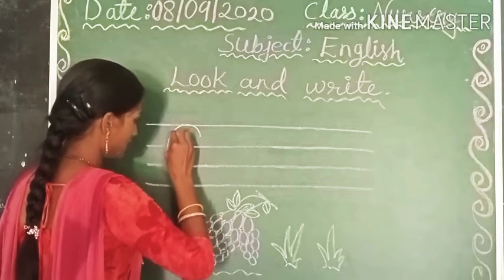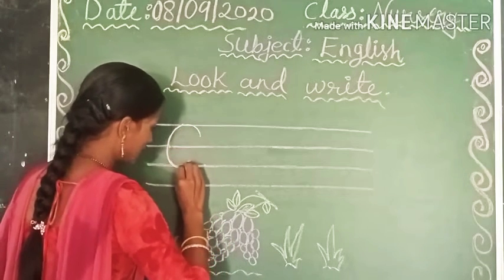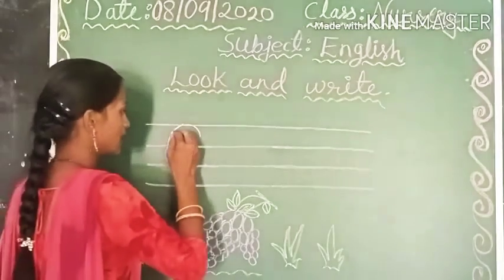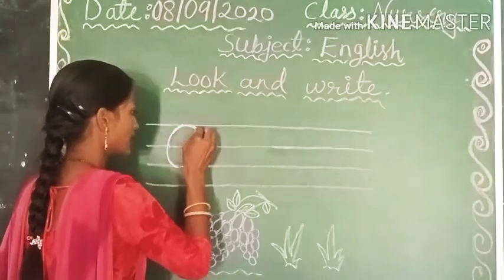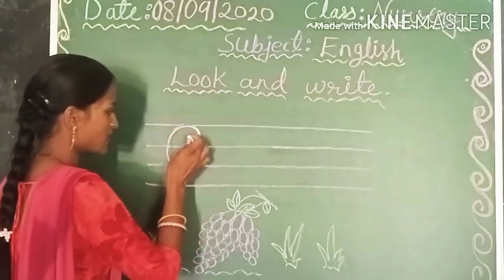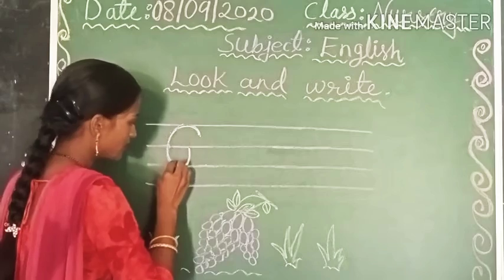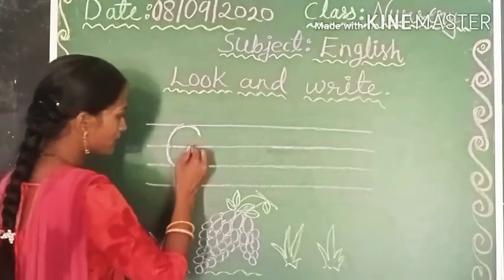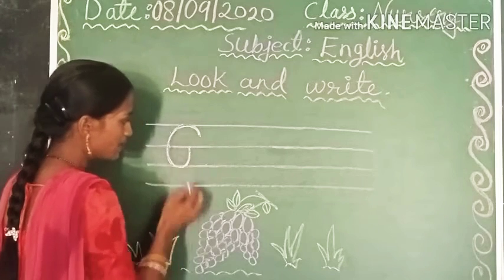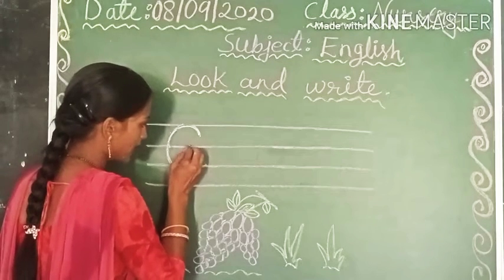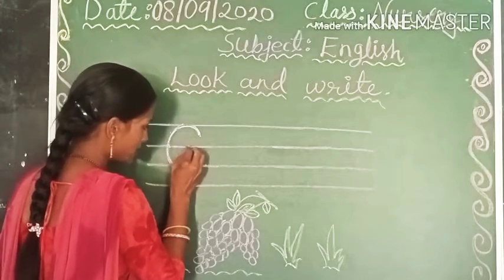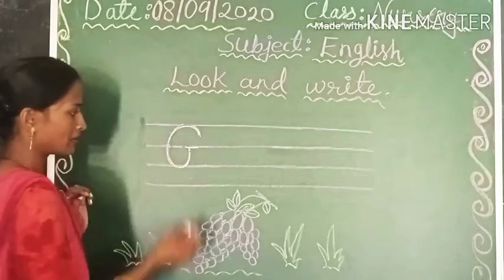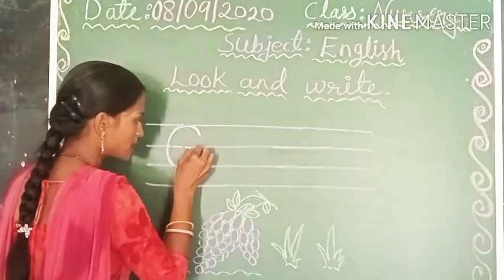यह देखिए, capital letter G बनाने के लिए हमें सबसे पहले एक ऐसा circle बनाना है, first line से start करते हुए, second line में ऐसे। उसके बाद हम बनाएंगे second line में एक sleeping line, ऐसे एक sleeping line बनाएंगे बच्चों।